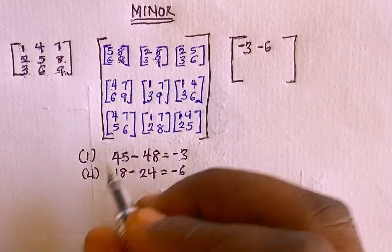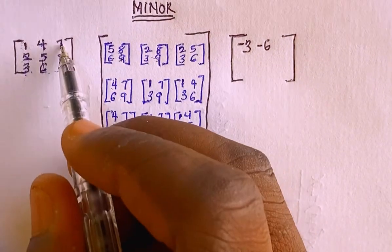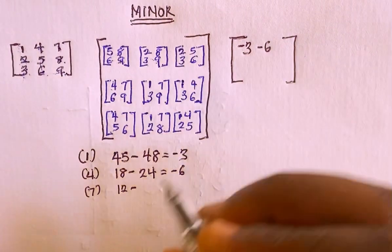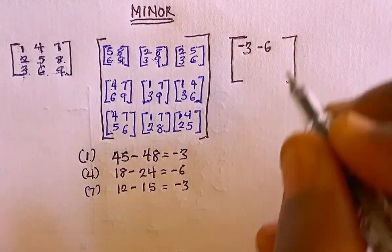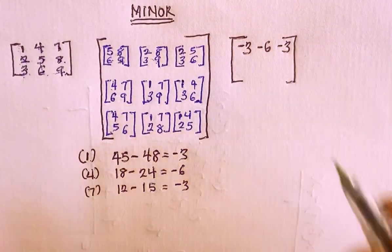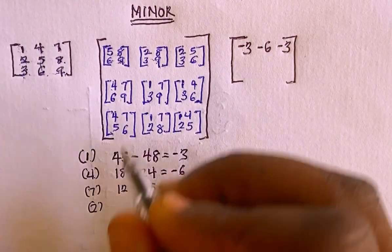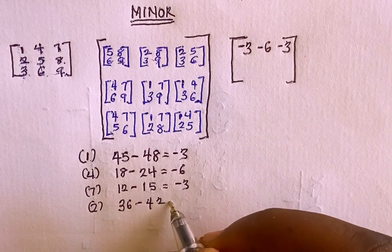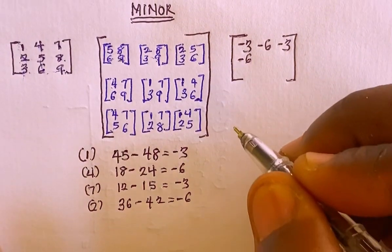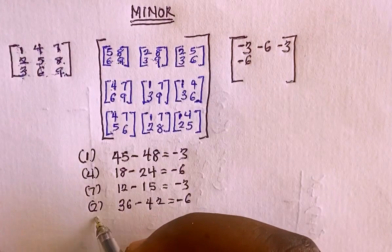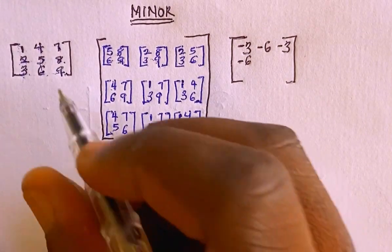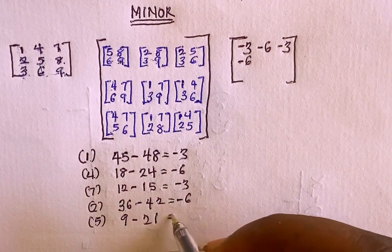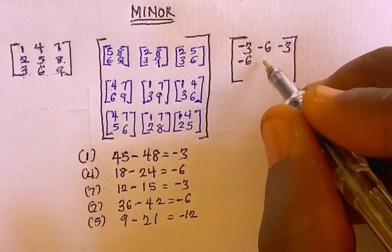For element 7, the sub-matrix is 2, 3, 5, 6, so 2 multiply by 6 is 12, minus 3 multiply by 5 is 15, giving minus 3. For element 2, the sub-matrix is 4, 6, 7, 9, so 9 multiply by 4 is 36, minus 6 multiply by 7 is 42, giving minus 6. For element 5, the sub-matrix is 1, 3, 7, 9, so 9 multiply by 1 is 9, minus 3 multiply by 7 is 21, giving minus 12.